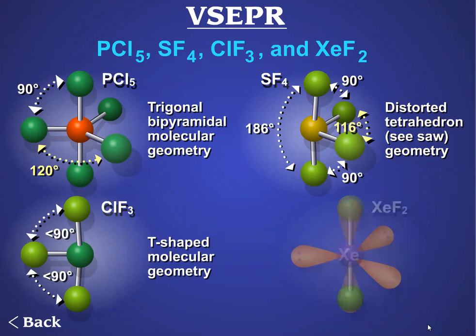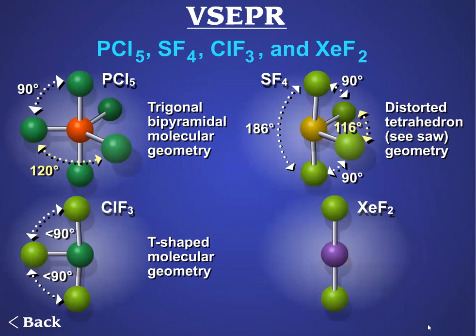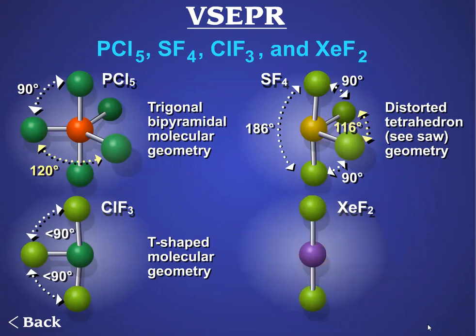In XeF2, there are two bonding pairs and three lone pairs. The lone pairs occupy the three equatorial positions. The molecular geometry — that is, the arrangement of the xenon and the two fluorine atoms — is linear. The fluorine-xenon-fluorine bond angle is 180 degrees.